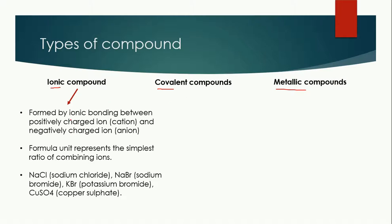There are three types of compounds: ionic compounds, covalent compounds, and metallic compounds. Ionic compounds are formed by ionic bonding between a positively charged and a negatively charged ion. They can be represented by a formula unit. Examples include sodium chloride — sodium is positive, chlorine is negative — and sodium bromide, where sodium is positive and bromide is negative.